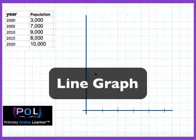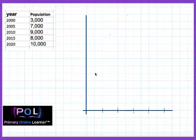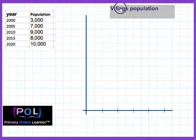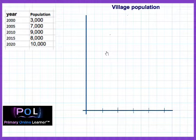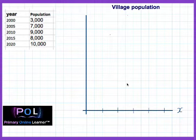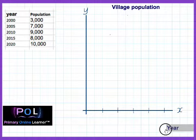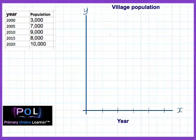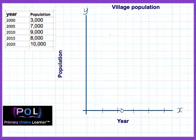We are going to draw a line graph of a village population. Our heading will be 'Village Population' — that's the name of our graph. A graph has an x-axis and a y-axis. On the x-axis we have the years, and on the y-axis we put what changes — so we put population there.